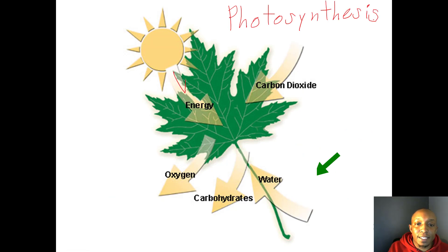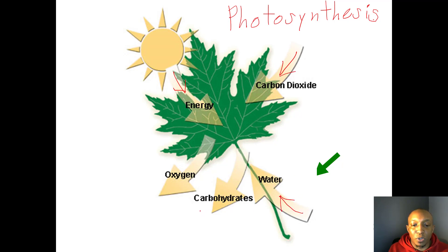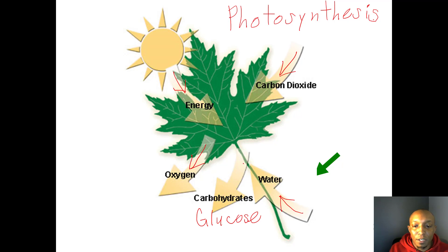Let's take a closer look at photosynthesis. This leaf right here takes in sunlight energy, carbon dioxide, and water through its roots in order to produce glucose, which is food for itself, and it gives off oxygen as a byproduct.